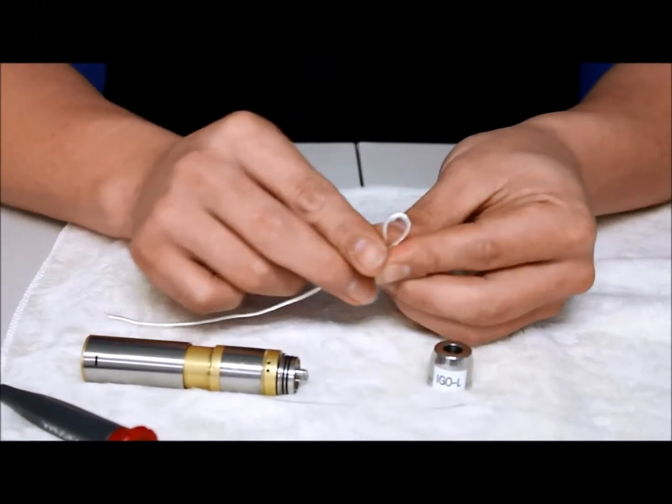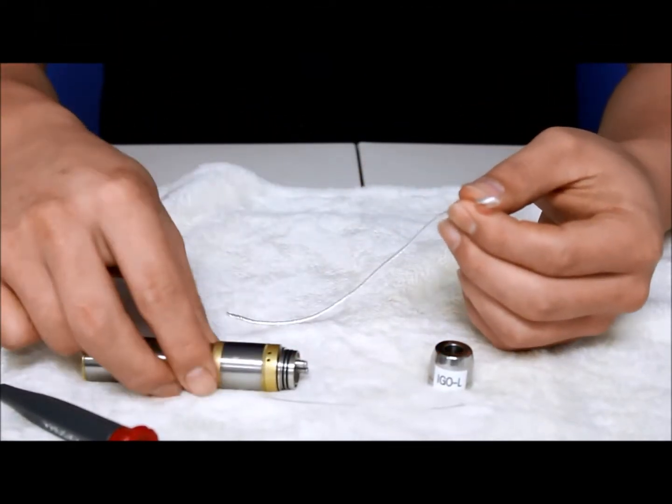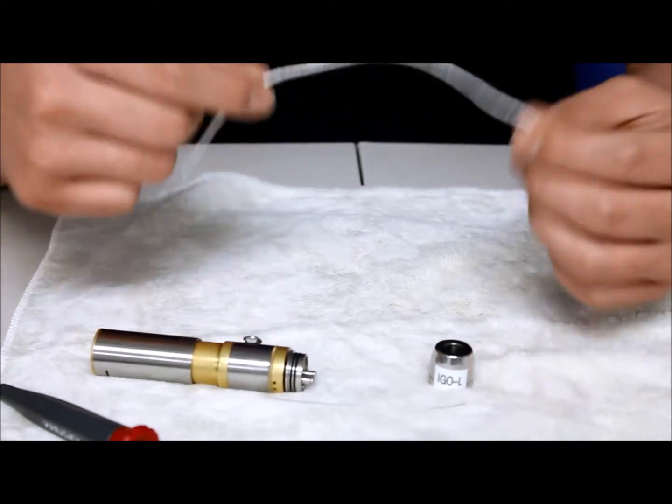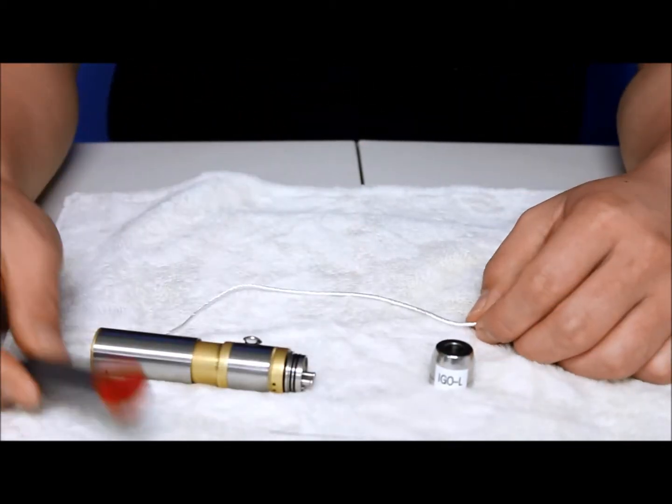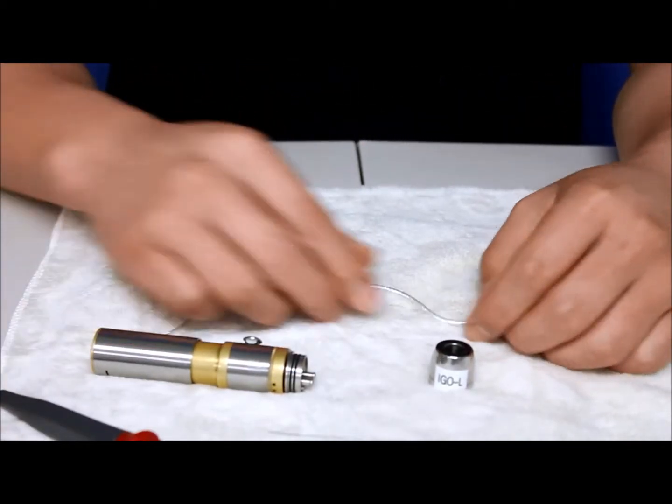Hi, this is Bill from Ultravape. I'm going to be building an IGAWL for you today. It's very simple. Silica, the 28 gauge, and a screwdriver.